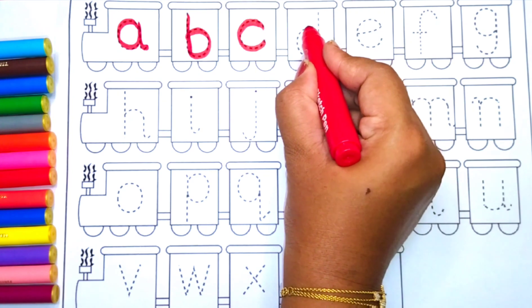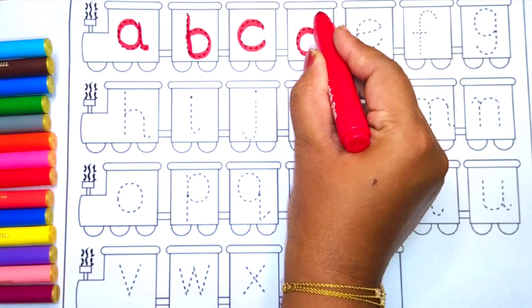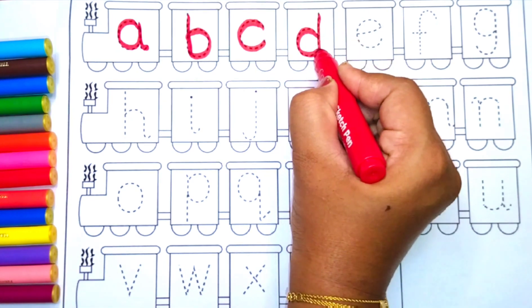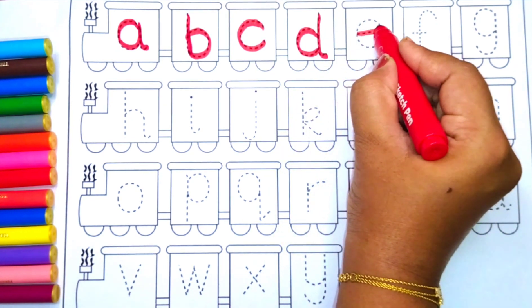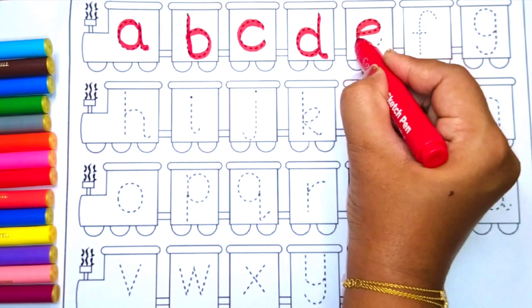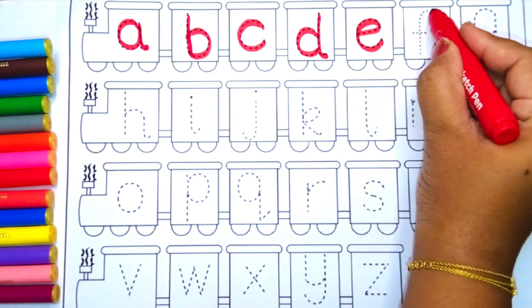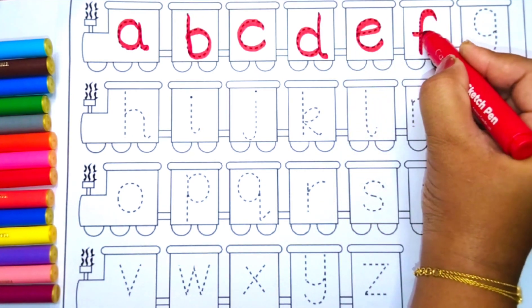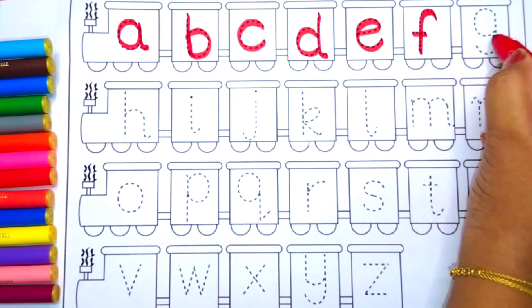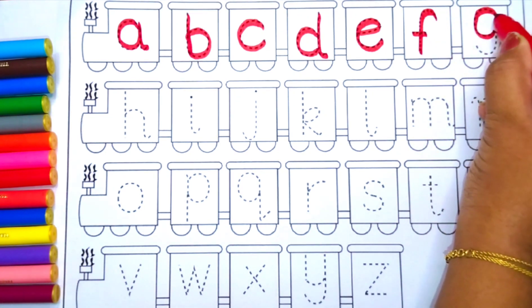D for Dog. E for Elephant. F for Fish. G for Goat.